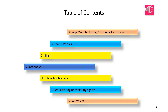After this, optical brighteners are added to soaps. Their major function is to make clothing appear brighter and cleaner. They are a modern-day replacement for the decades-old practice of bluing — adding small amounts of blue dye to fabric to make it appear brighter.